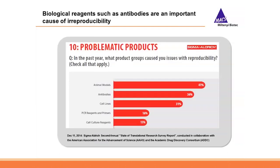In 2014, Sigma-Aldrich published a survey on translational research asking which products caused issues with reproducibility. Directly after animal models, which are obviously diverse with unpredictable influences, scientists named antibodies. That antibodies were mentioned at second position indicates they are one of the key variables contributing to irreproducible results, and highlights the importance of providing reliable antibodies to scientists.